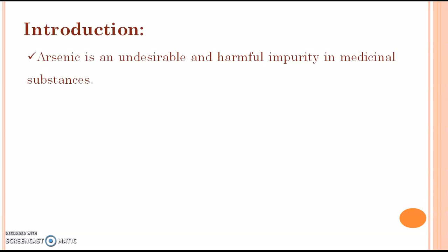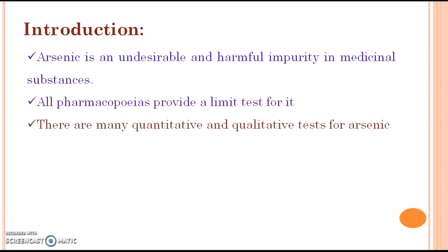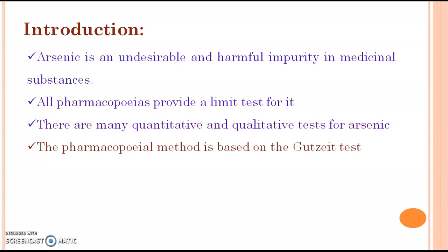Arsenic is an undesirable and harmful impurity in medicinal substances. All pharmacopoeias provide a limit test for it. There are many quantitative and qualitative tests for arsenic. The pharmacopoeia method is based on the gadget test.